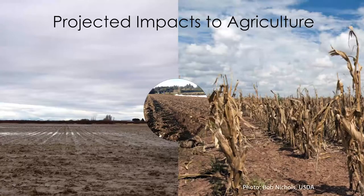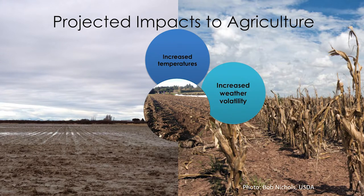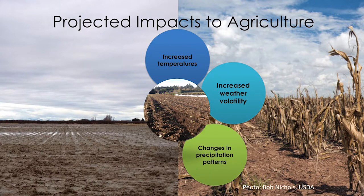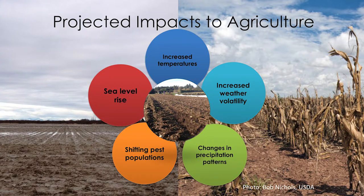Around the world, we expect that climate change is going to have substantial impacts on agriculture. Some examples of those impacts are an increase in temperatures, which in some places is likely to improve crop productivity, while in others, depending on the crop, cause failure. It's likely to increase weather volatility, shift precipitation patterns so in some places things will get wetter, in some places drier, in different times of the year. It's likely to shift pest populations, so insects will be in places they've never been seen before, or weeds in new locations. And it's likely to contribute to sea level rise, which for low-lying agricultural regions around the world can have substantial impact.